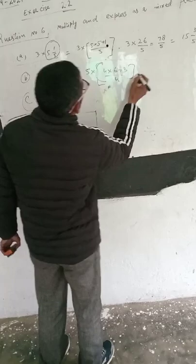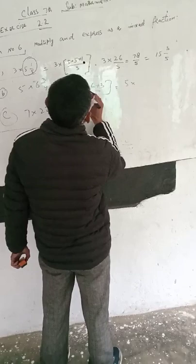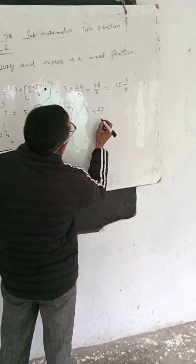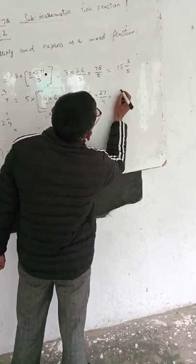5 into 4 is 24, and 3 is 27, divided by 4. So 5 is 17, 25. 5 twos are 10, and 3 is 13, divide by 4.